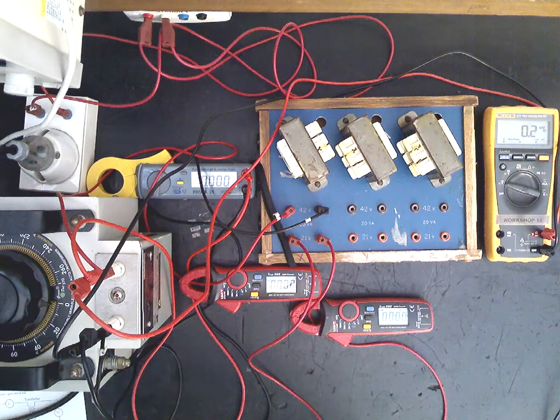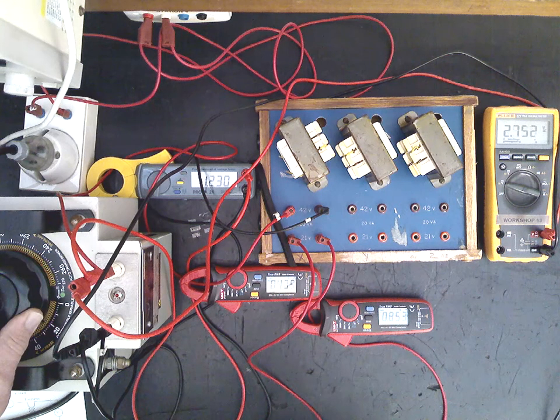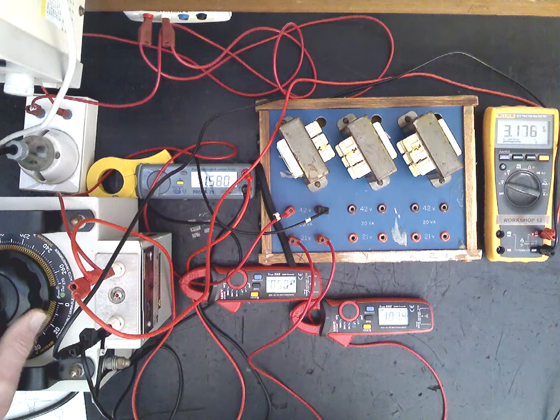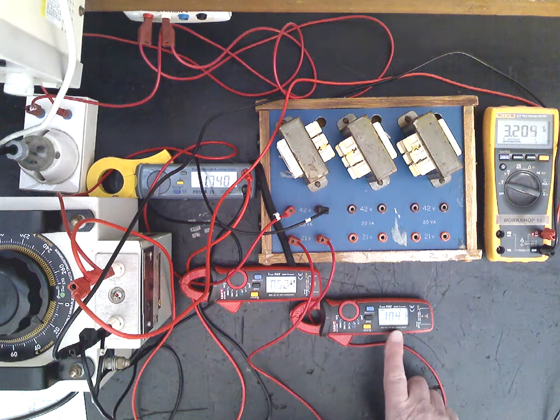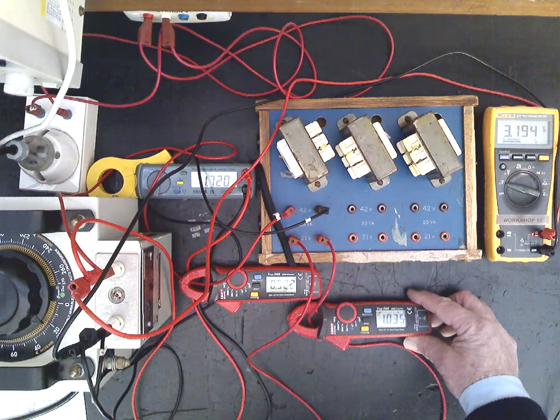turn the power supply on, and then wind slowly up your variac until you're achieving full load current in the secondary of the transformer. We're seeing there about one amp flowing through there.